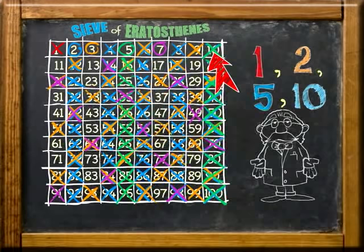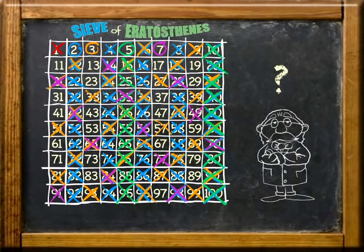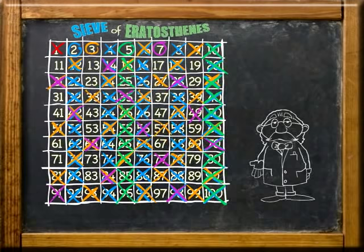Now that we've found all of the multiples of 2 through 10, all we have left that are not circled are prime numbers. They are prime numbers because they only have factors of 1 and themselves.